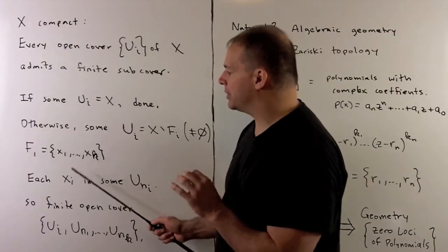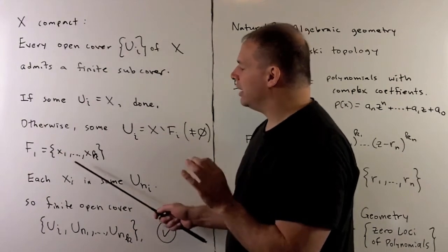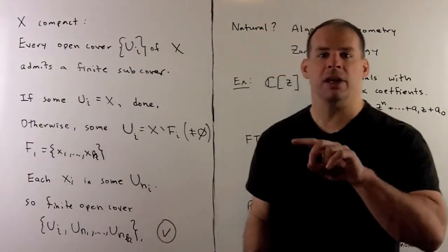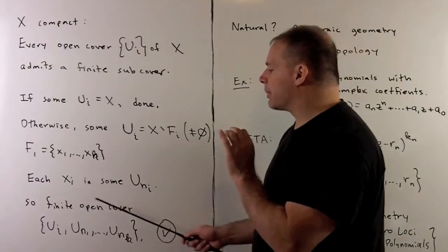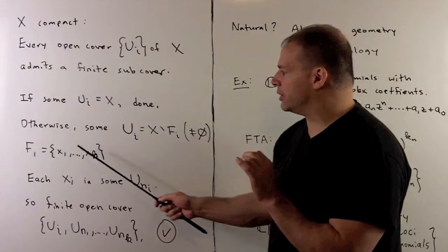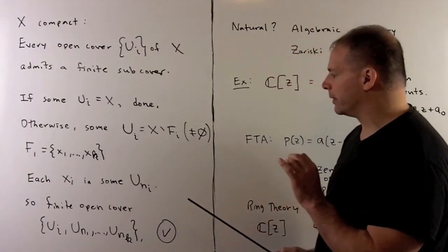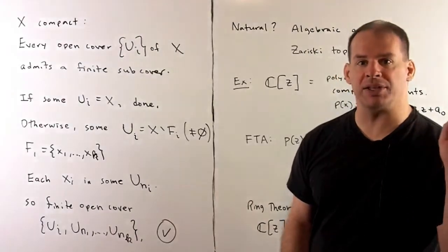If f_i has the points x1 through x_k, because we have an open cover, each of these x's is going to live in some open set of the cover. So, to get a finite subcover, we use our u_i, and then we throw in the open sets that cover each of these points individually. So that gives us a finite subcover. So, our space is compact.